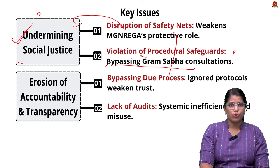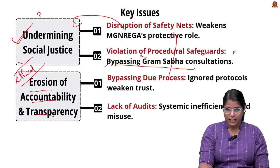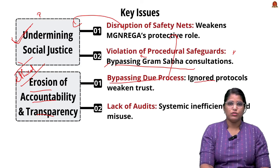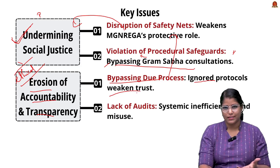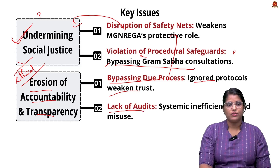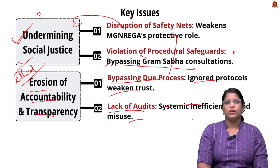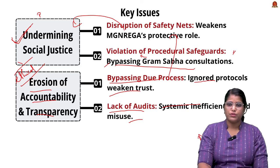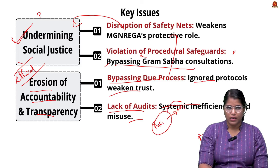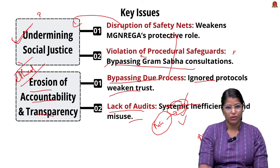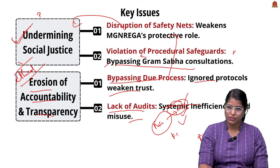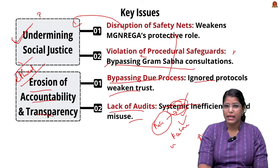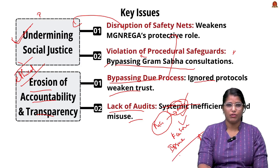Social justice is undermined because removal of a person should involve consultation from the Gram Sabha, but this is often bypassed, disrupting the safety net. Additionally, there is erosion of accountability and transparency — arbitrary deletion bypasses due process, ignores protocols, weakens trust in government organizations, and leads to lack of audit, systemic inefficiencies, and misuse. These are the key issues regarding arbitrary deletion of workers from the MGNREGA scheme.